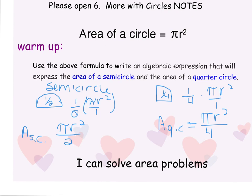Alright, hopefully this was just common sense to you. If you're figuring out a semicircle, it is half of the circle, so you are taking half of the area — the area of the circle divided by 2. For the area of a quarter circle, you take the area of the circle and divide it by 4 because it is a quarter circle.